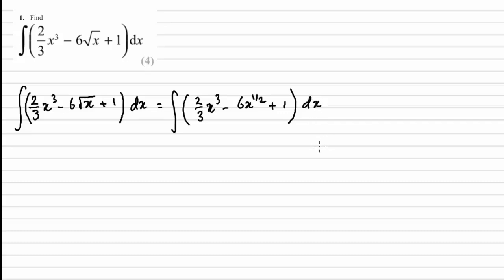Now we can just integrate. So 2/3 x³, we add 1 to the power and then divide by the power. This integrates to 2/3 x⁴ divided by 4 minus 6x, now a half plus 1 is 3/2, and then again we divide by 3/2. Constants integrate to x when we're integrating with respect to x, so 1 integrates to x and we mustn't forget our constant of integration C, which is going to be worth one mark.